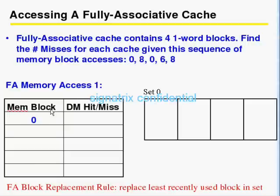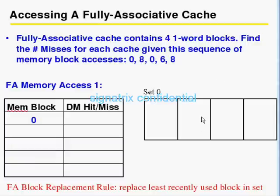First it wants to access the zeroth location — that is actually a miss. So it will fetch the data from the main memory and put it here. Then the eighth location — it will put the data here. Next, again zero — now it has to replace. Which one is least recently used?